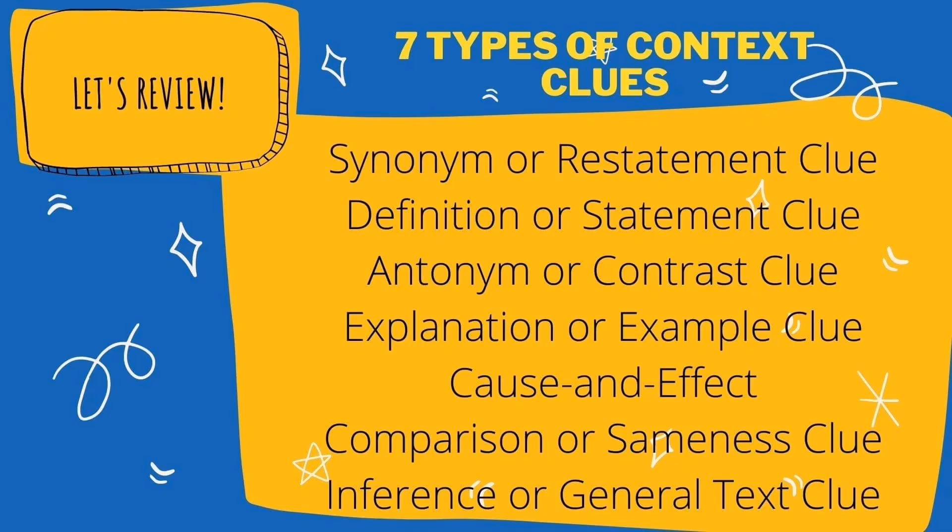Let's have a quick recap of the seven types of context clues. First is the synonym or restatement clue, wherein it provides the synonym of words to provide the meaning of an unfamiliar word.